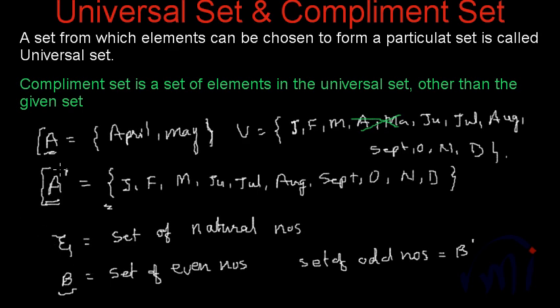For example, in set A we have April and May, so the complement set of A will have all the other months of the year other than April and May. I hope now you understand what is universal set and complement set. In the next video, we are going to discuss Venn diagrams and a few operations performed on sets, and we will understand those operations using Venn diagrams also. Bye-bye till then and keep watching MathSmart.